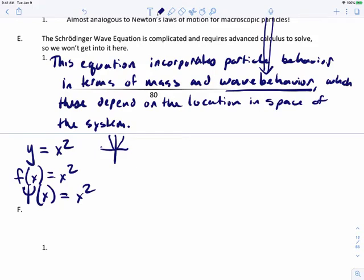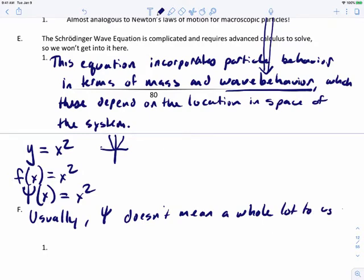These wave functions are basically how we plot the path that an electron will take. These actually do matter to us. Usually, ψ, the wave function, doesn't mean a whole lot to us at this point in the story.